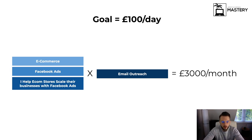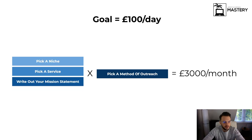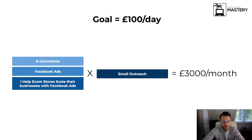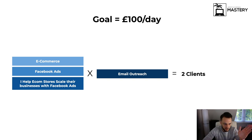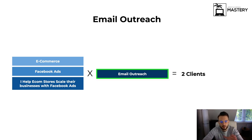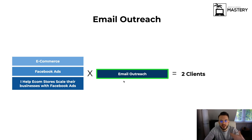Let me use my own example: niche is e-commerce, service is Facebook ads, mission statement is 'I help e-com stores scale their business with Facebook ads,' and my method of outreach is email outreach. We now need to figure out how we can use all this information, multiply it by our email outreach, and get to clients. We need to solve for X — how many emails do we need to send out to turn this into two paying clients?